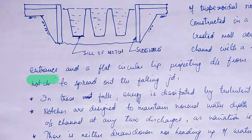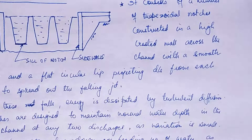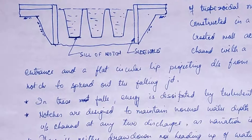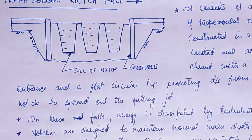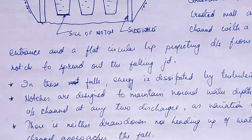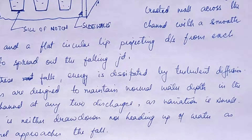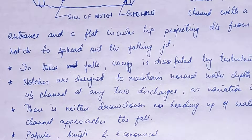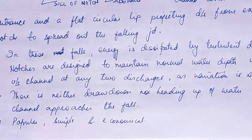The fall has a smooth entrance and a flat circular lip projecting downstream from each notch to spread out the falling jet. Here you can see the notch and the sill of the notch, with side walls on either side. In this type of fall, the energy is dissipated by turbulent diffusion.